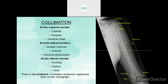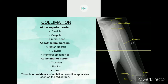For collimation: at the superior part of this radiograph, we can see the structures of clavicle, scapula, and humeral head. At the lateral border, we can see the greater tuberosity, the clavicle, and the humeral epicondyle. At the inferior border, we can see the structures of trochlea, radius, and ulna. There is no evidence of radiation protection apparatus seen on the radiograph.